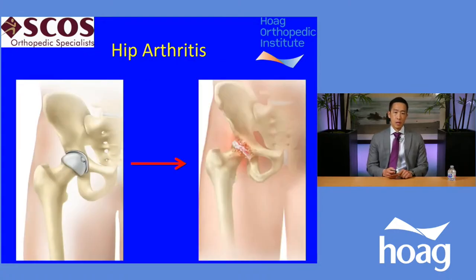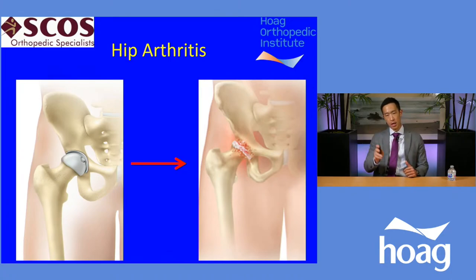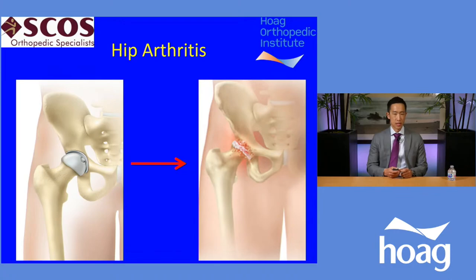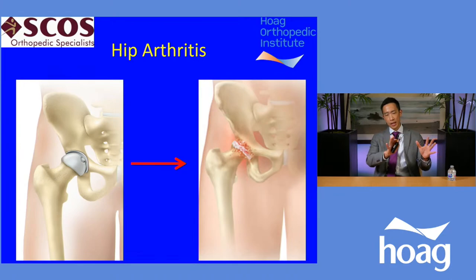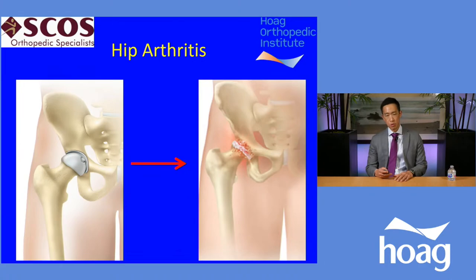Going back to the picture — the smooth, glistening cartilage can gradually wear away to what's visible on the right side of the screen: a loss of cartilage surface resulting in what we see on x-ray as bone-on-bone arthritis. The left side shows a normal hip joint; the right shows a hip joint with arthritis. When someone comes into my office, I always start with an x-ray to assess the bones and cartilage.